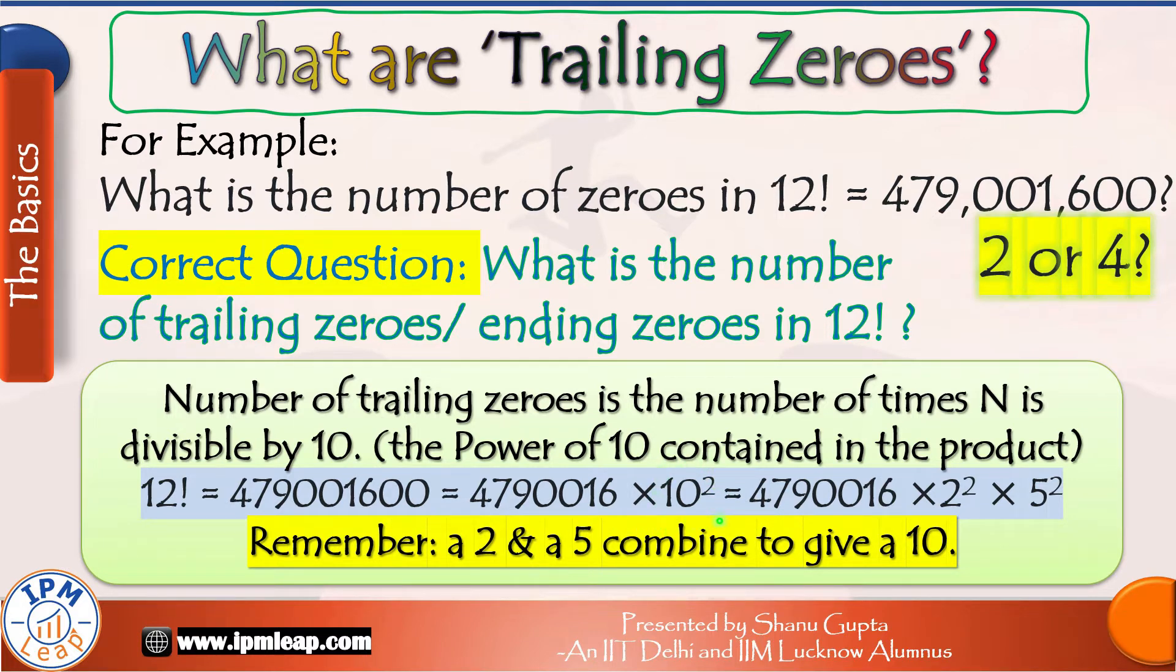Further, we know that 10 is equal to 2 × 5. 2 and 5 combine to make a 10. So we can expect that the number of tens in a product will be governed by the total number of 2s and 5s contained in it. It is a very important point to remember in order to understand this concept.